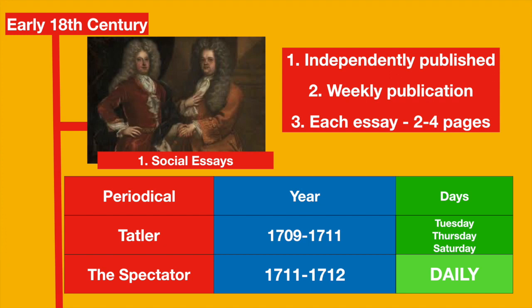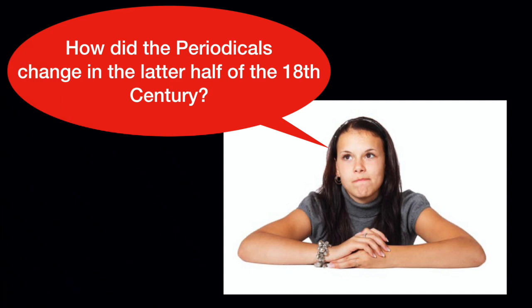Their periodical essays had three significant features: each periodical comprised many essays, each essay was published independently through weekly publication, and the length of these essays was from two to four pages. The two essays they are most famously known for are: The Tatler, published from 1709 to 1711 on Tuesdays, Thursdays and Saturdays, and the most popular one, The Spectator, published from 1711 to 1712 as a daily publication.